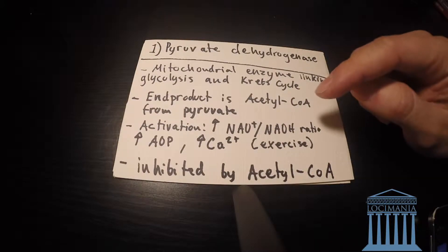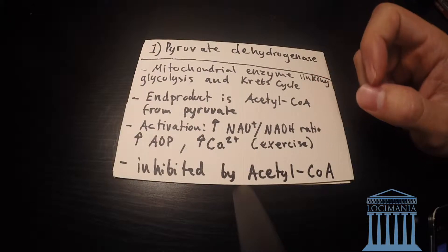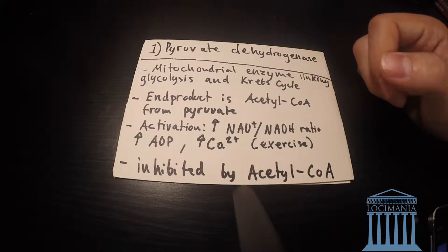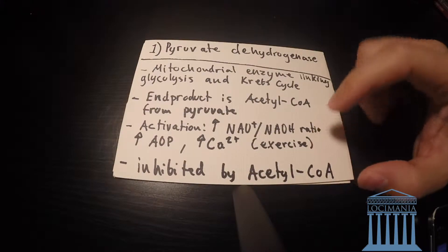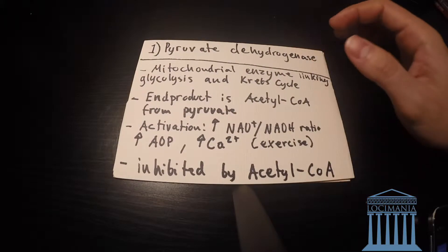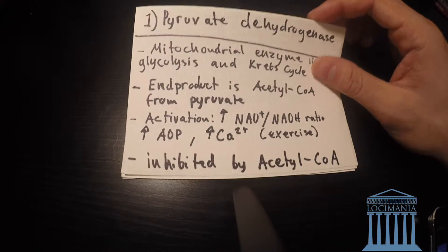Pyruvate dehydrogenase is inhibited by its product, acetyl-CoA. It's a mitochondrial enzyme linking glycolysis and the TCA cycle, also called the Krebs cycle.